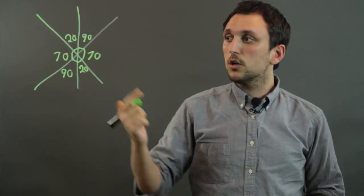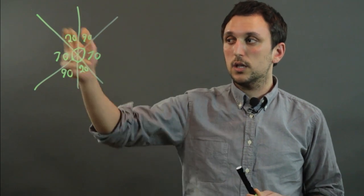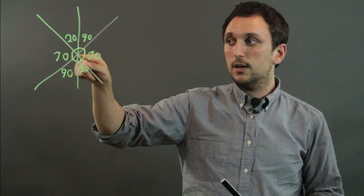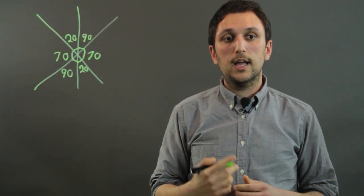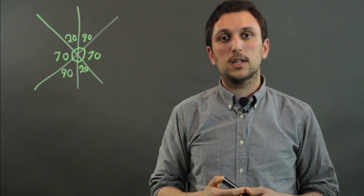So to repeat, concurrence in geometry has to do with concurrent lines, which has to be three or more lines intersecting at one point. So I'm Charlie Kasov, and you've just learned about concurrent lines in geometry. Thanks a lot.